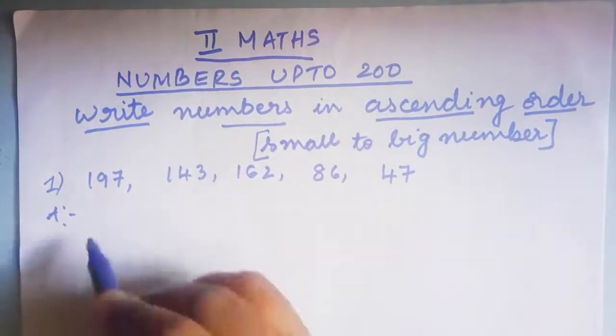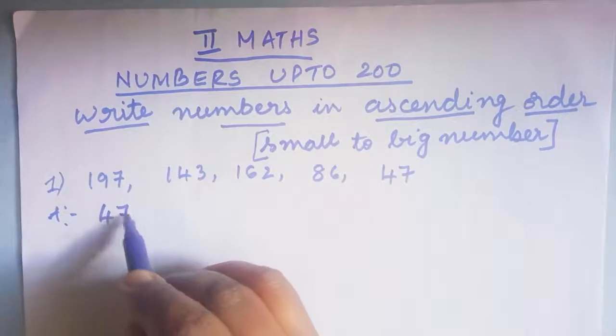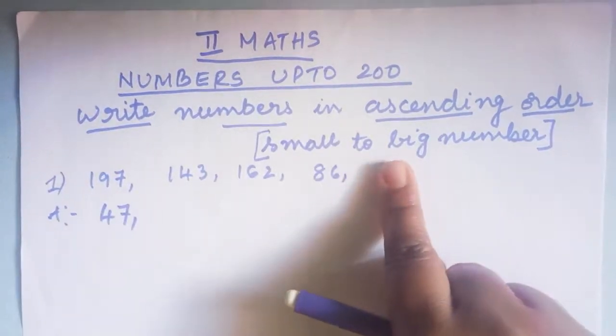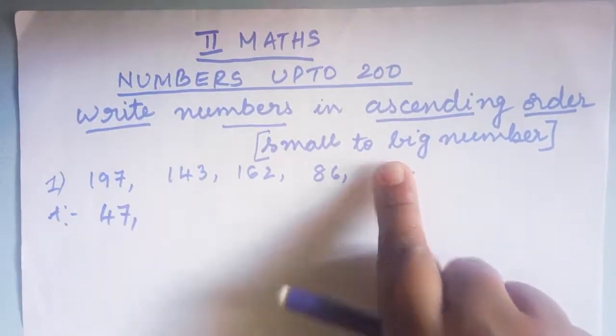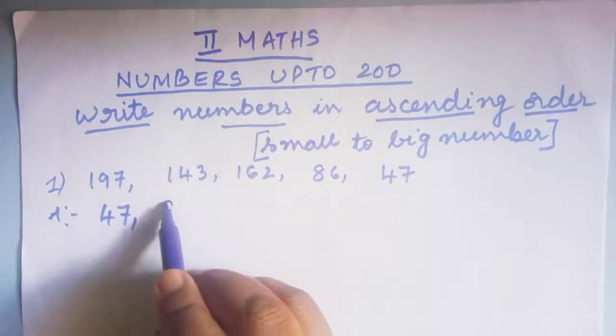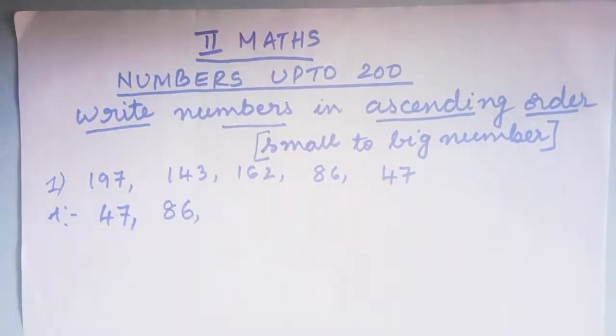Children, after 47, the next small number is 86. Can you all see and tell me, write it down, which is the next small number? The next small number is 143.